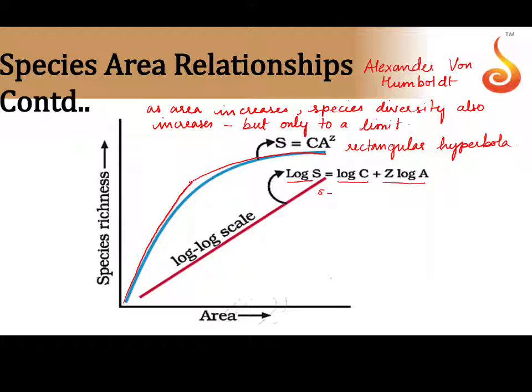S stands for species diversity, A stands for area, C stands for the y-intercept, and Z stands for the slope.